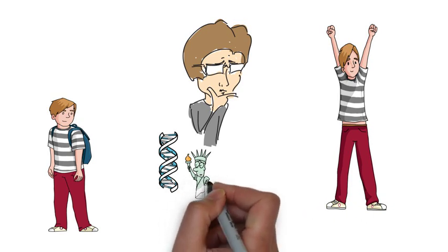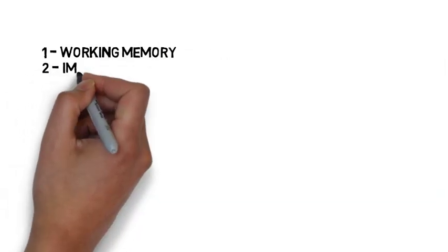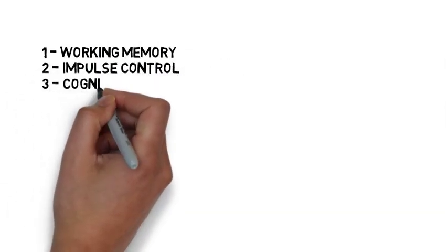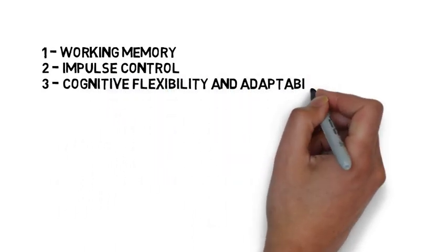As with any skill, the more you practice, the better you can become at it. According to neuroscientists, there are three executive functions associated with self-discipline: working memory, impulse control, and cognitive flexibility and adaptability.